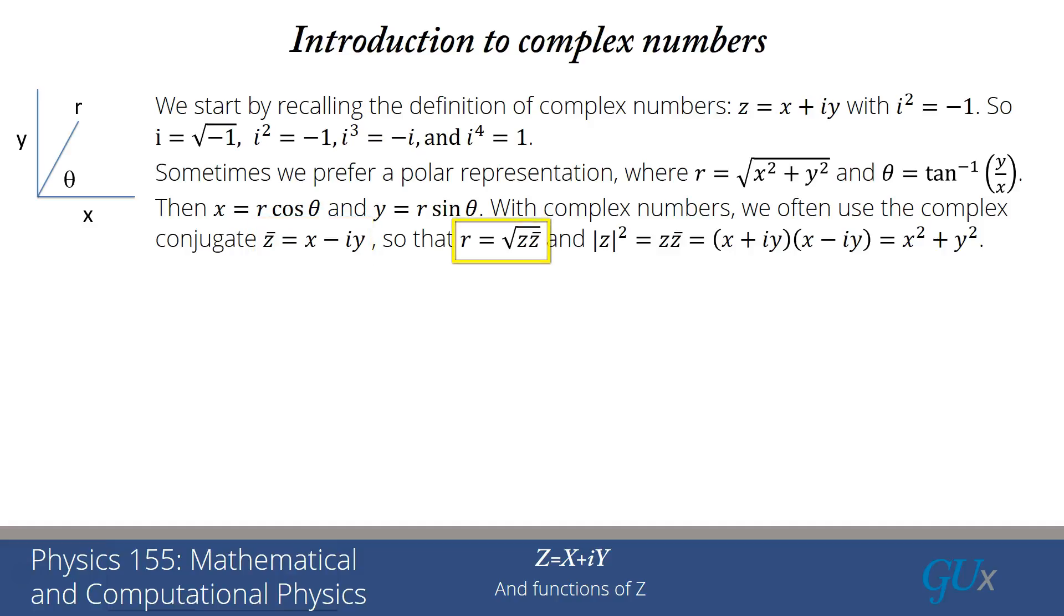In terms of Z and Z bar, R is the square root of Z times Z bar. Or another way of writing this, the modulus squared of Z equals Z times Z bar. If I explicitly write that out, that's X plus IY times X minus IY, which equals X squared minus the quantity IY squared, which ends up being X squared plus Y squared. That's the square of the modulus of the complex number.